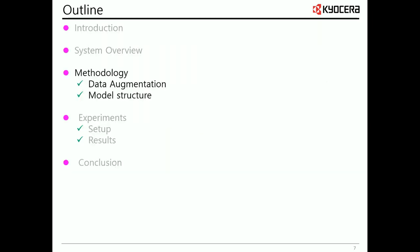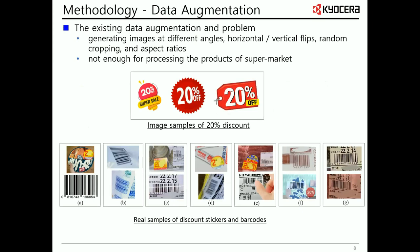Now let's talk about methodology. In this part, I will first introduce data augmentation. The existing augmentation is just for generating images that vary at different angles, horizontal or vertical flips, random cropping and aspect ratio, and so on. However, this augmentation is not enough for processing products in the supermarket, because there are various statuses and aspect ratios on the discount stickers attached to the products and printed buckles.